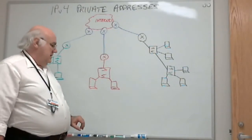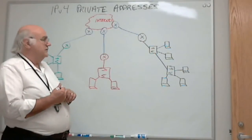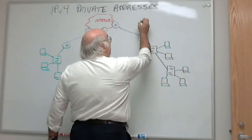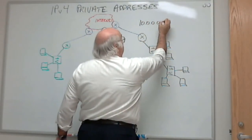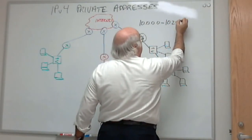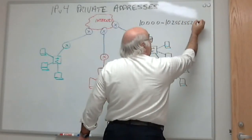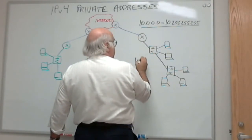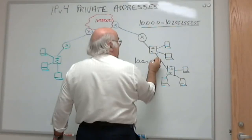Now, there are certain restrictions on private addresses. There are only certain blocks that are available. One of the blocks is 10.0.0.0 through 10.255.255.255. That translates to network 10.0.0.0 slash 8.